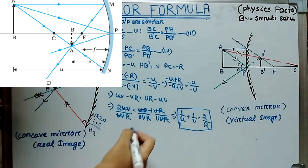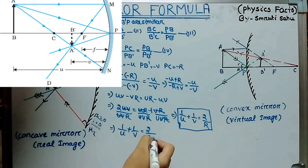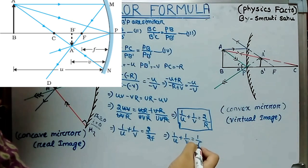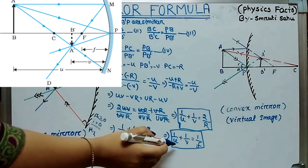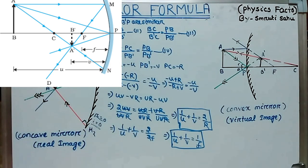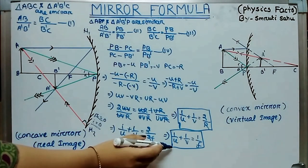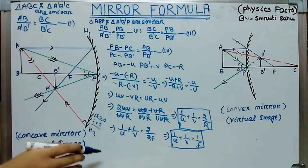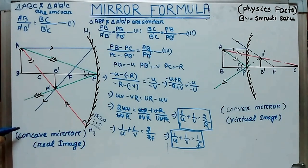Since R = 2F, substituting gives 1/u + 1/v = 2/(2F), and the 2s cancel. So we get the mirror formula: 1/u + 1/v = 1/F. This equation relates the object distance and image distance with the focal length. This formula was derived for a real image formed by a concave mirror. The same procedure is followed for the virtual image produced by a concave mirror.